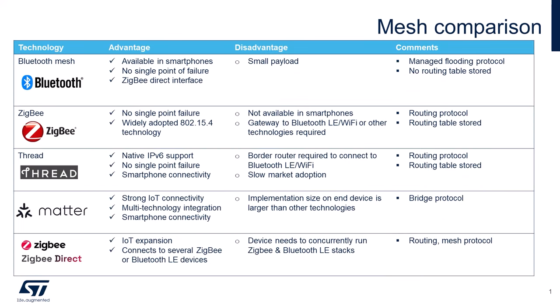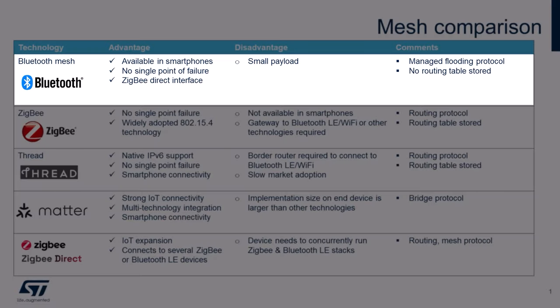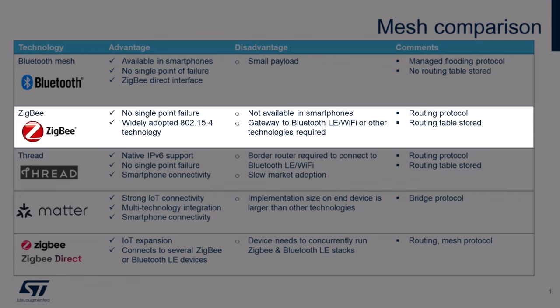Mesh networks offer advantages like extended communication range, reliability, and scalability, but out-of-the-box support for different features varies across protocols. Bluetooth Mesh is a managed flooding technique enabling many-to-many device communications, using the same protocol stack as Bluetooth LE, mainly used in lighting systems and home automation. ZigBee employs routing mechanisms based on network and expected traffic patterns, eliminates single points of failure, and provides a large ecosystem of certified products, though it needs a gateway to interface with other systems.